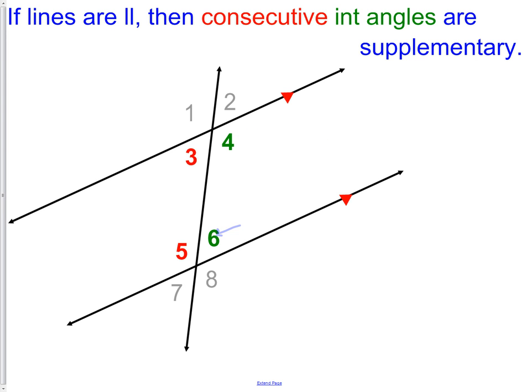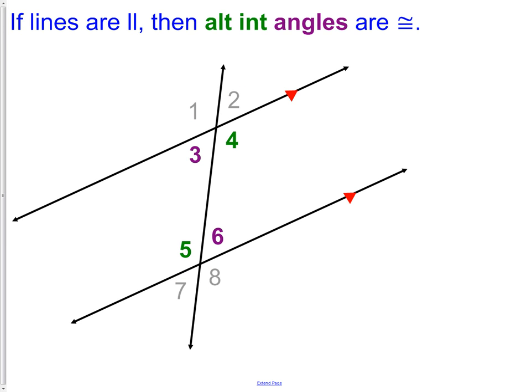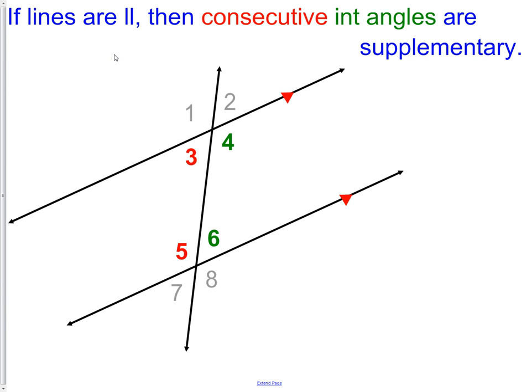All of the previous examples, which were alternate exterior, alternate interior, and corresponding, were all congruent. Now we are on to consecutive interior angles, and these are supplementary.